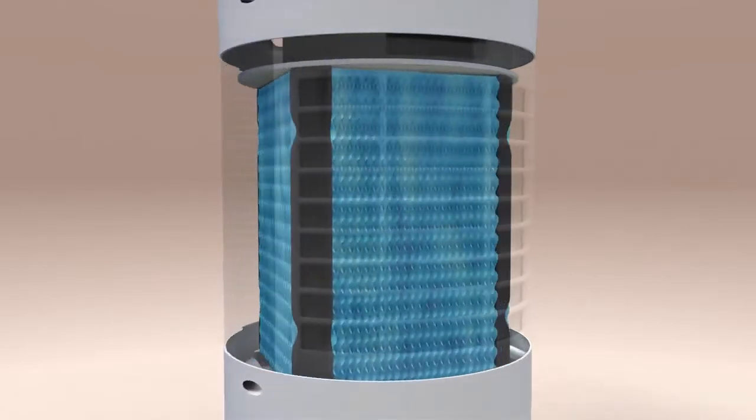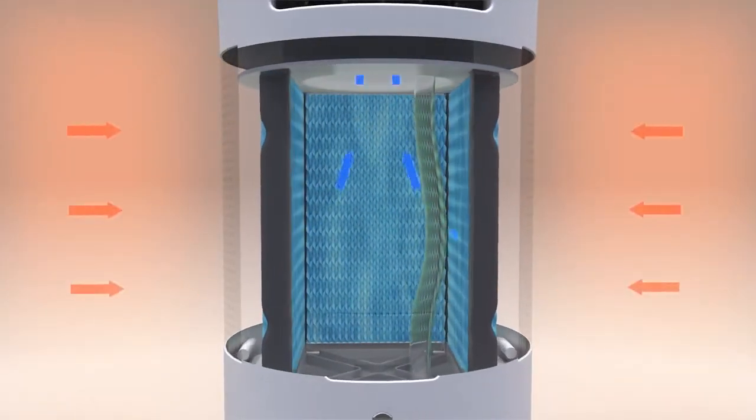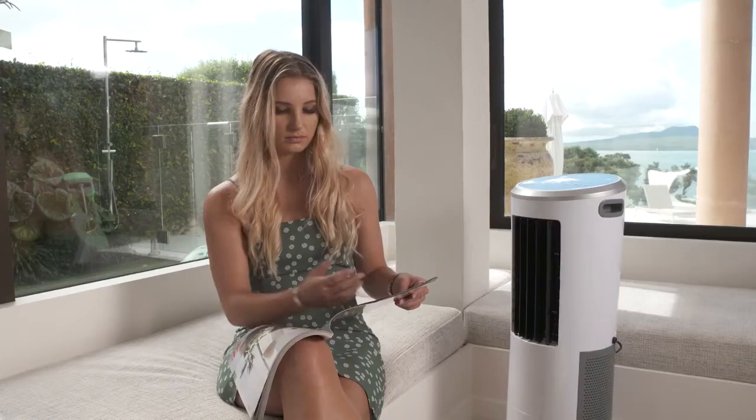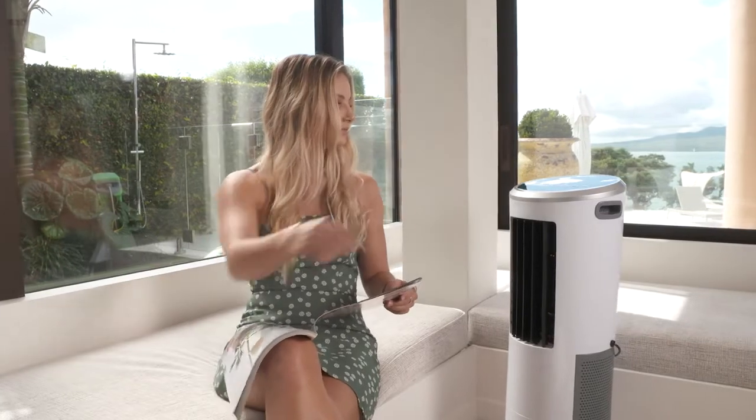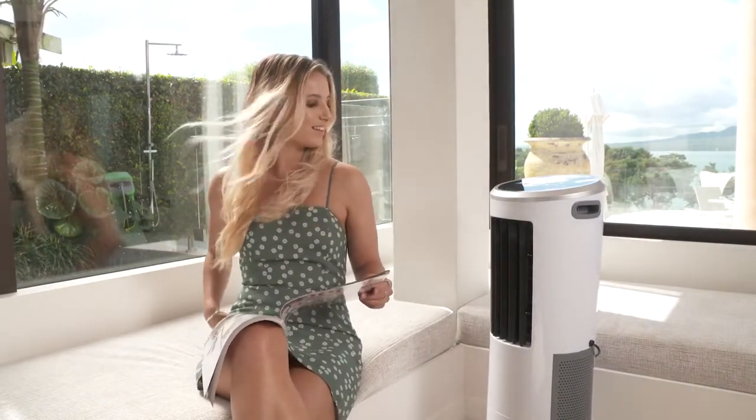Keep in mind that the InstaChill emits water into the air. So for the best results ensure you leave a door or window open to keep the humidity in the room low and get the most cooling power. Do not worry about the cost of losing your cool air to the outside. This is why we have made the InstaChill so affordable to run.